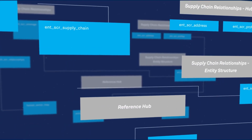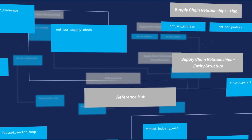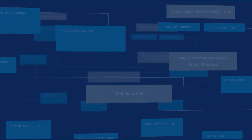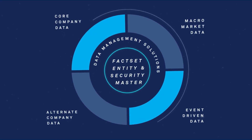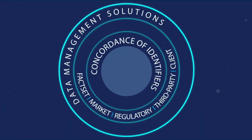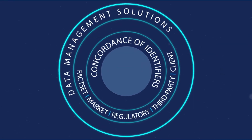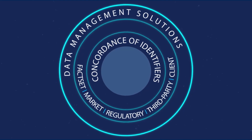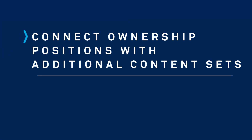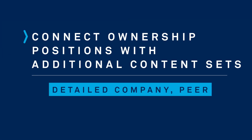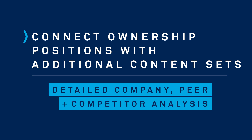The true value of understanding the ownership profile of a company is integrating these insights with other information. FactSet's entity-centric symbology model makes it easy to create meaningful connections. Connect ownership positions with additional content sets for detailed company, peer, and competitor analysis.